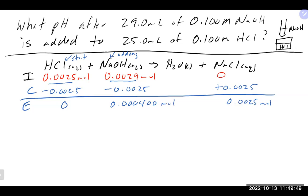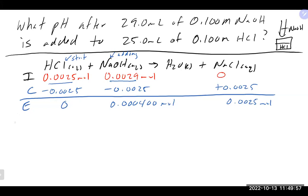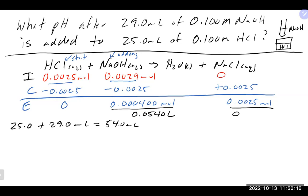Now convert back to molarity. Total volume is 25 + 29 = 54 milliliters = 0.054 liters. Dividing 0.0004 by 0.054 gives 0.00741 M for the NaOH, and 0.0025 ÷ 0.054 = 0.0463 M for the NaCl.